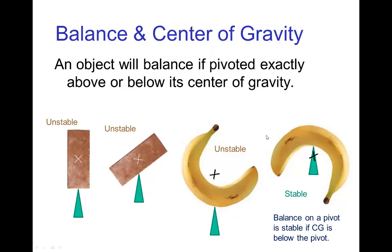One property of the center of gravity is that if you have an object that's exactly balanced on a pivot point, then the center of gravity will be either directly above the pivot point or directly below the pivot point. If it's directly above the pivot point, then any small shift in the object and it tips over and falls, so that's an unstable balance.